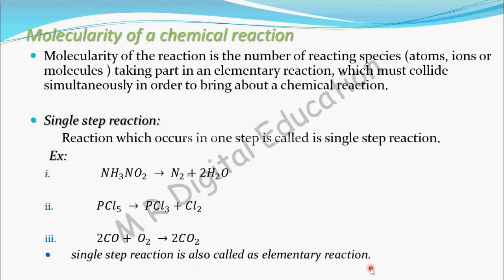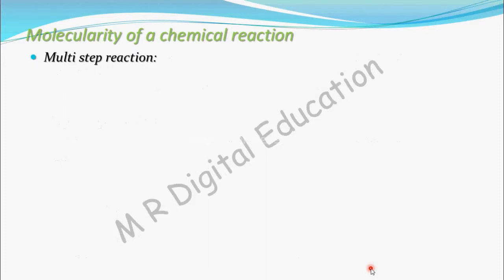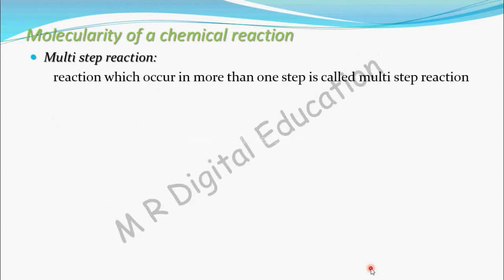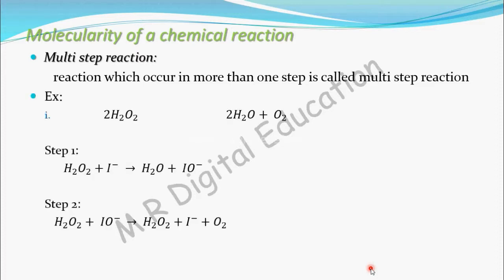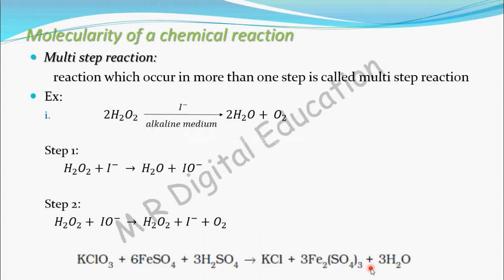So, an elementary reaction is nothing but a reaction which occurs in a single step. Now let's see what a multistep reaction is. A reaction which occurs in more than one step is called a multistep reaction. For example, 2H2O2 in alkaline medium gives 2H2O plus O2.